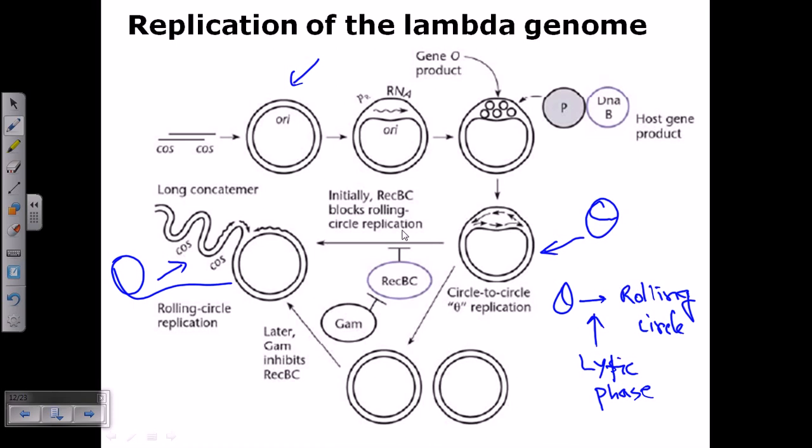from theta to rolling circle mode. In this case, once it is duplicating its circular DNA, then it later uses the GAM and other products. GAM inhibits the REC-BC protein, so as it is inhibiting the REC-BC, finally it will block the synthesis pathway by the theta mode and it will start the rolling circle mode of replication.